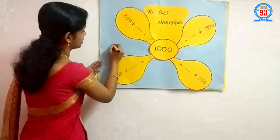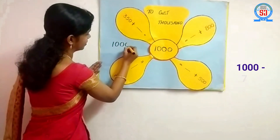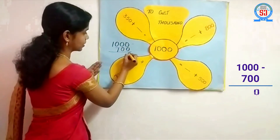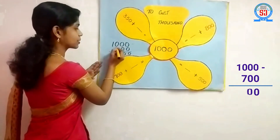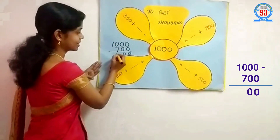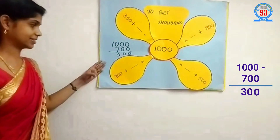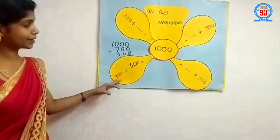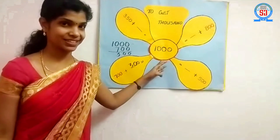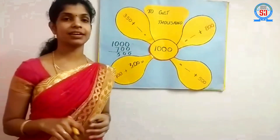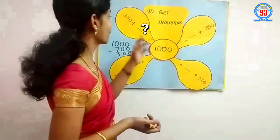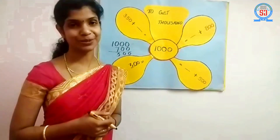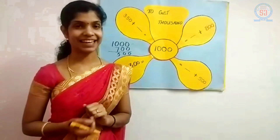Let's find out. I will take 700 and subtract it from 1000. Zero minus zero is zero, zero minus zero is zero, zero minus seven — we can't do it, so we borrow: ten minus seven is three. So we get 300. Therefore 700 plus 300 equals 1000. The balance three missing numbers you have to find out. Are you ready? It is very easy, you can do it. We will see in the next class. Take care, bye-bye.